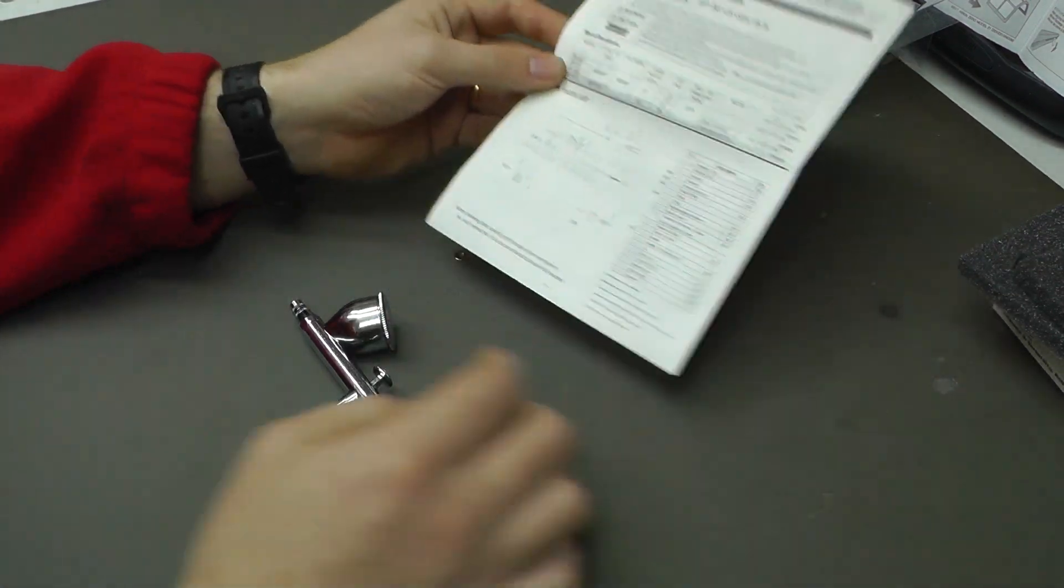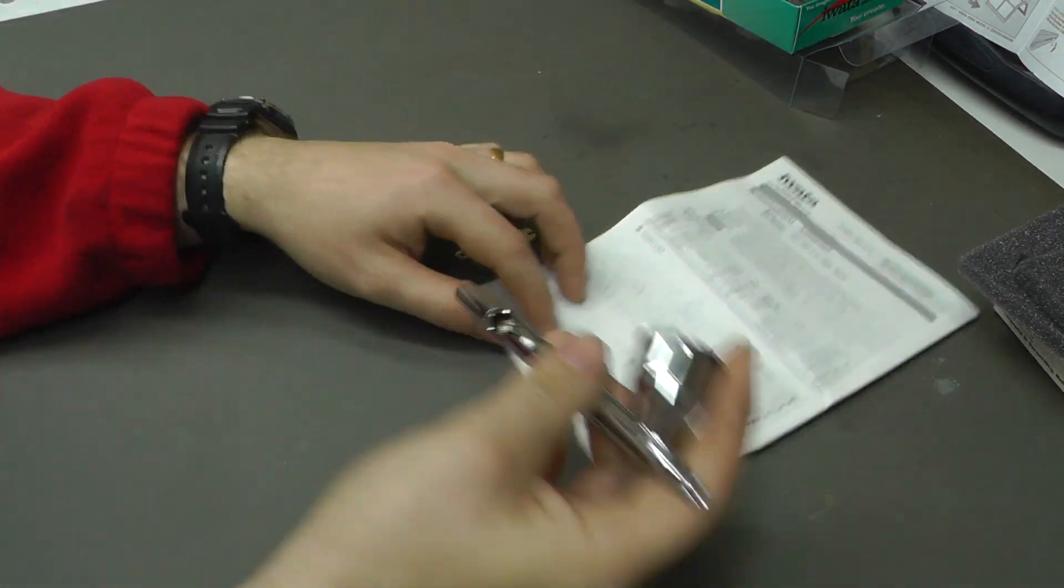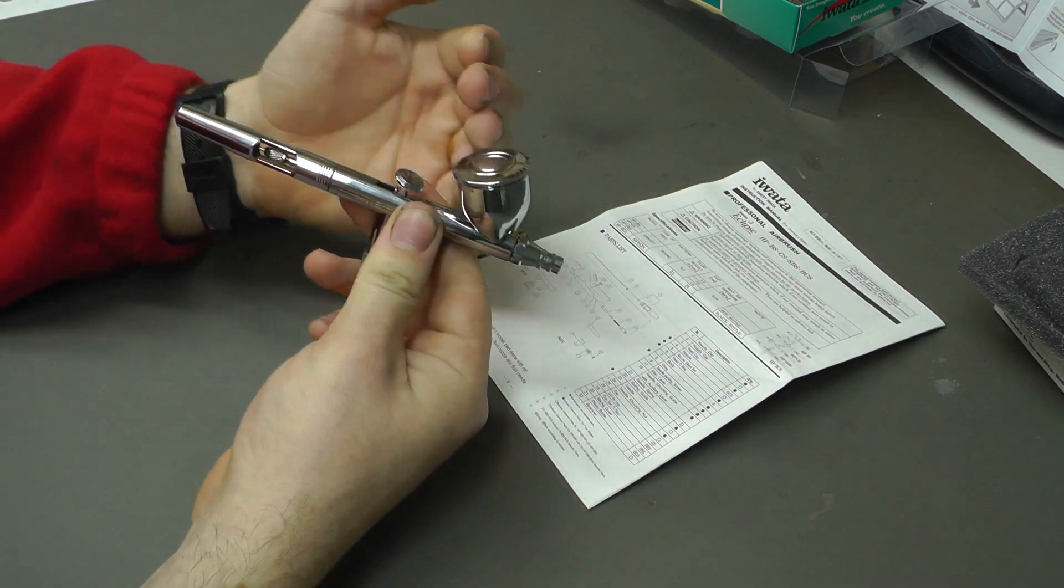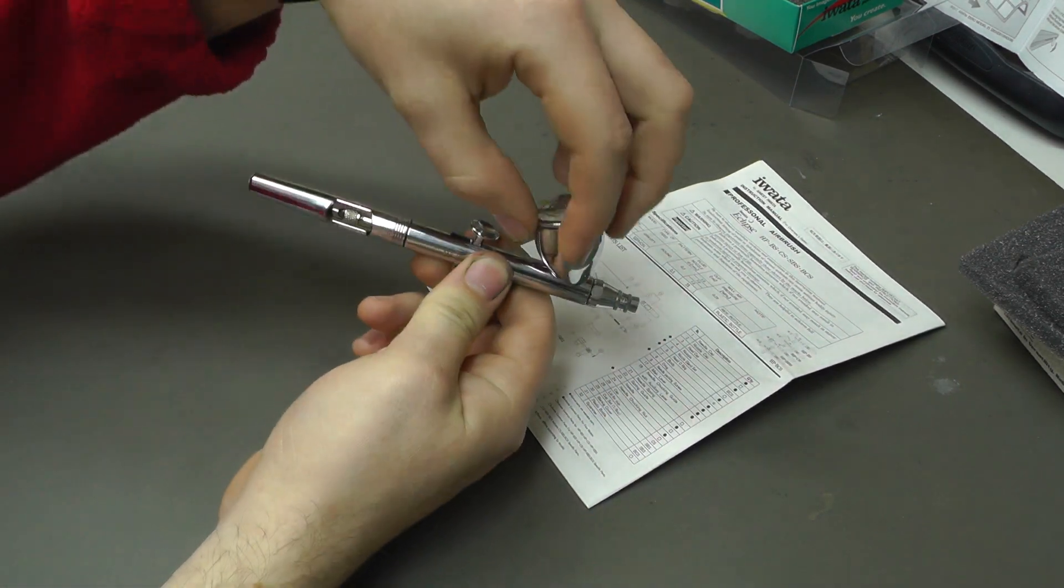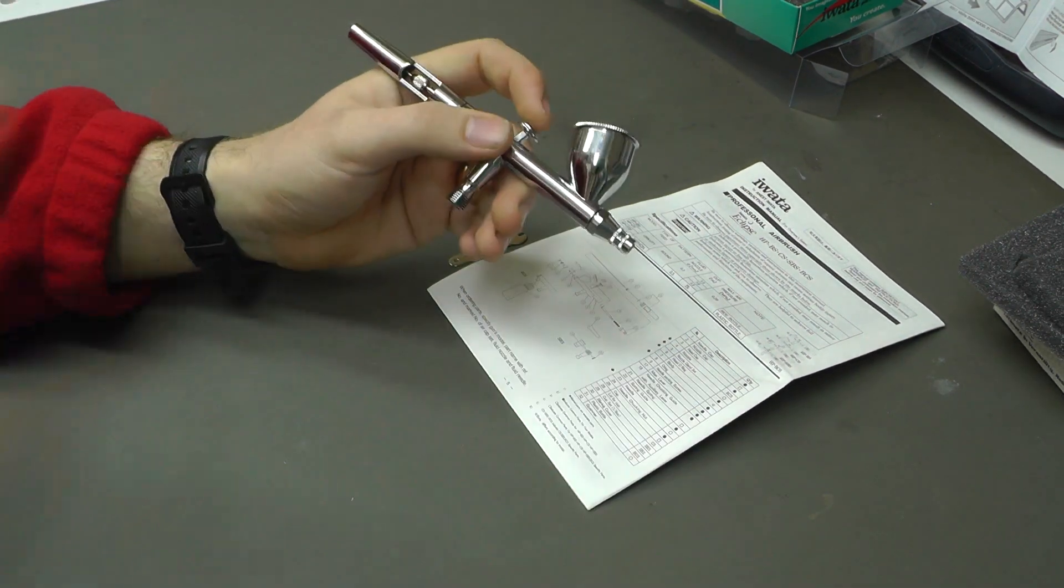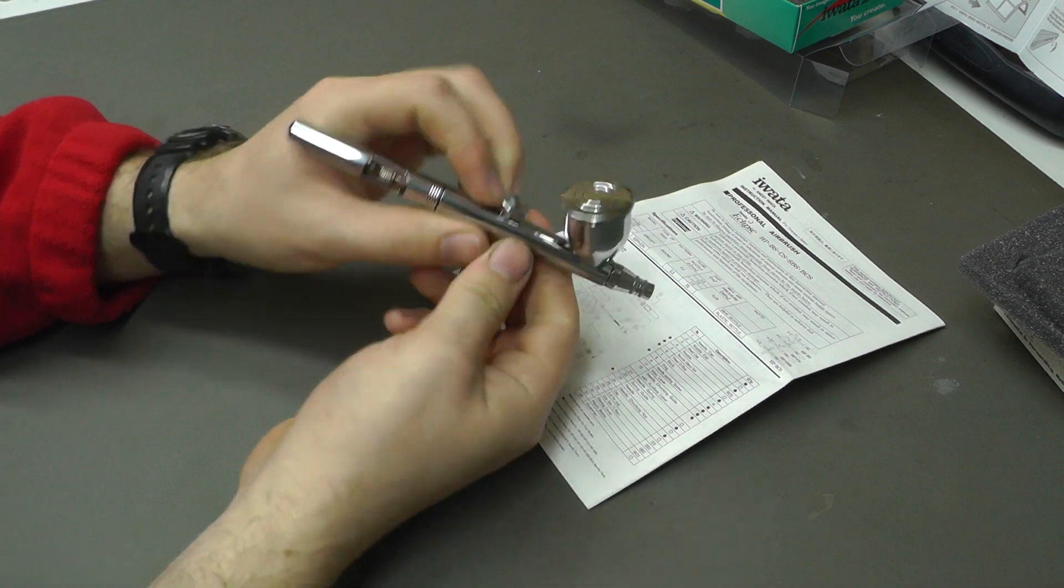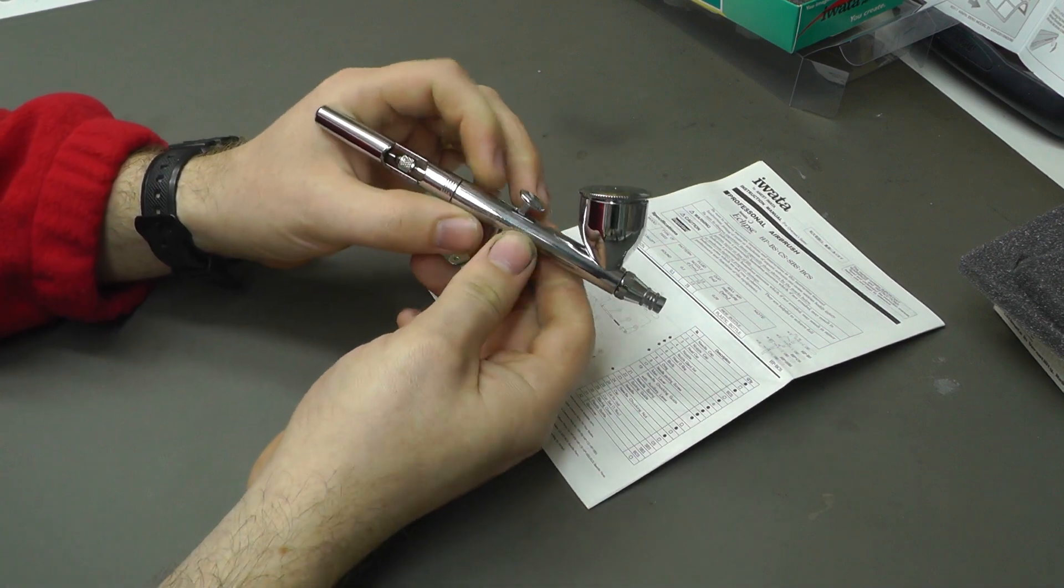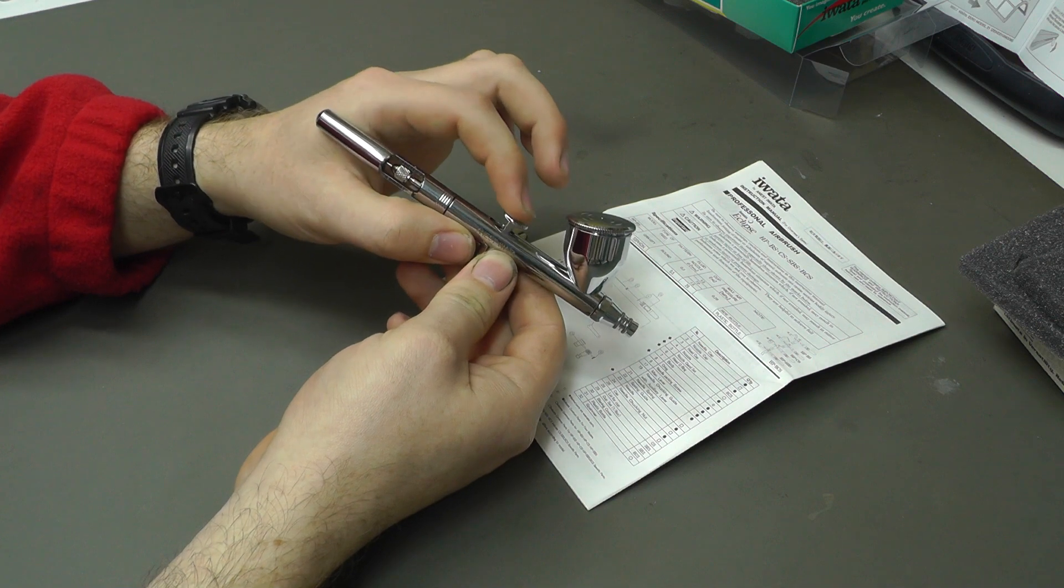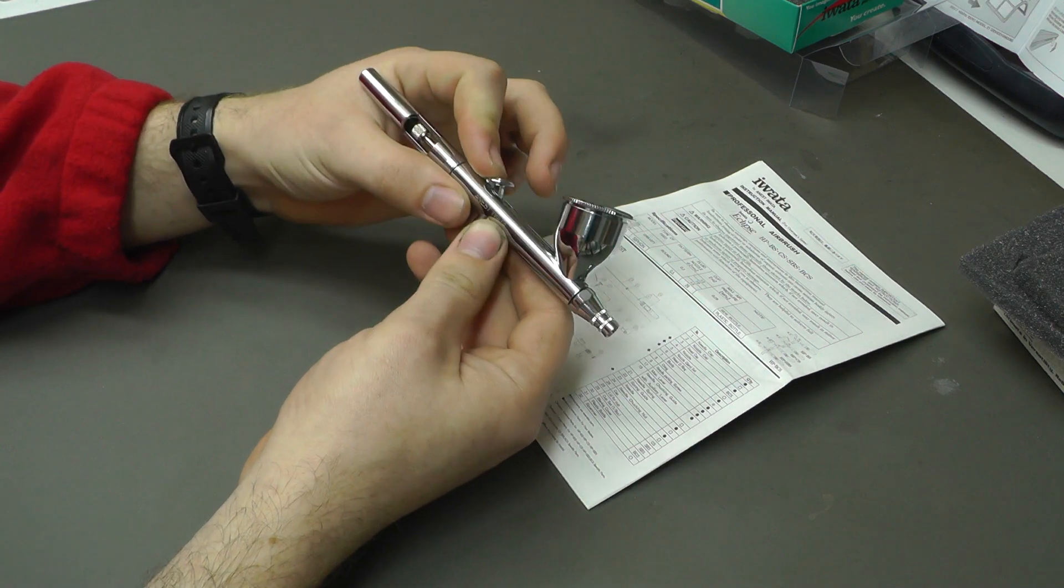Now this particular airbrush is the CS version, which means it's the gravity feed. We've got our cup on the top and gravity feeds down to the needle. It's also a dual action airbrush. Which basically means push down for air and then pull back to get paint.